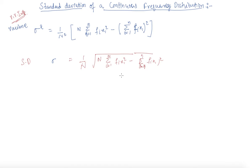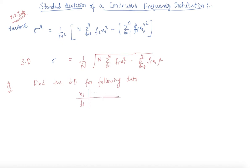I will now discuss a question based on it. The question is: find the standard deviation for the following data. The table given has xi values 3, 8, 13, 18, 23 and corresponding fi values 7, 10, 15, 10, and 6.